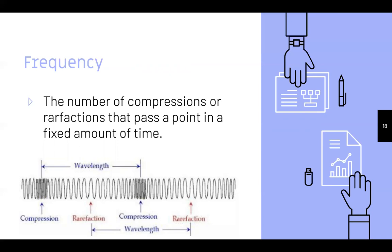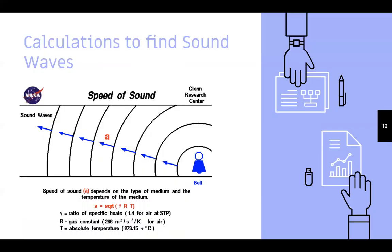Calculations to find sound waves can be complex, but I want to pay more attention to the picture: the speed of sound wave is traveling outward in a circular path in all directions, going in the same direction as the vibrations and the disturbance — you can see those arrows going outward in all directions.